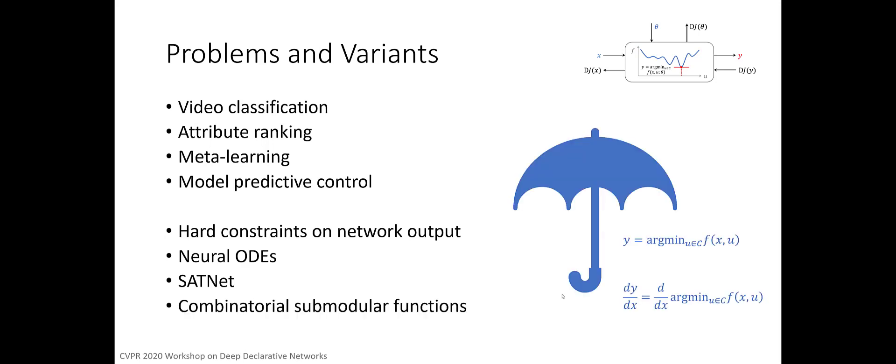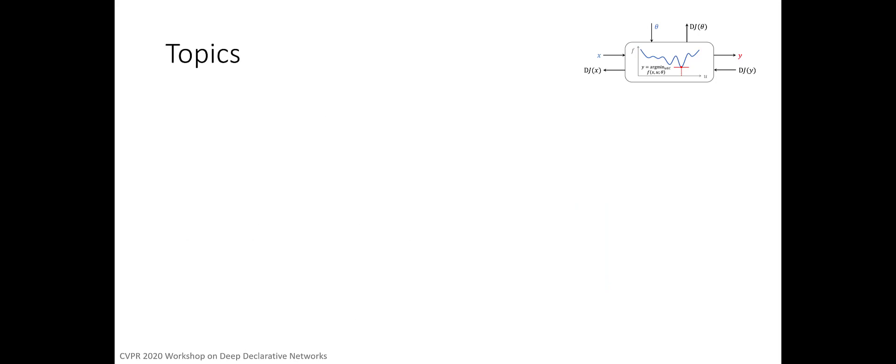This workshop explores the advantages and potential shortcomings of declarative networks and their variants, bringing ideas developed in different contexts under a common umbrella. We will discuss technical issues that need to be overcome in developing such models and applications of these models to computer vision problems that show benefit over conventional approaches.